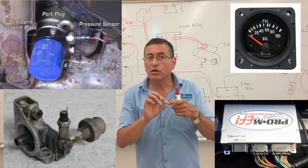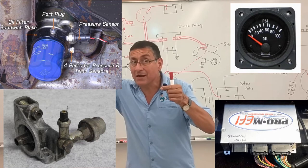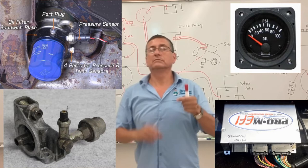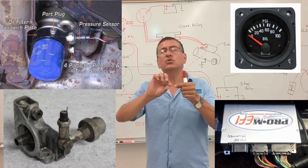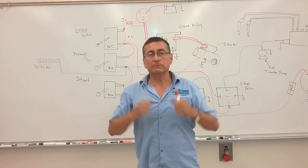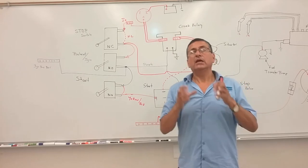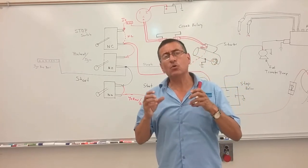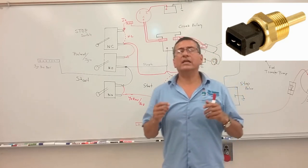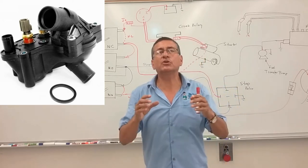The sensor sends the signal through the sender and activates the gauge or instrument. The sensor is used to send a signal for the gauge or computer, and the switch is used to kill the engine. In temperature, we have the coolant temperature switch and the coolant temperature sensor.